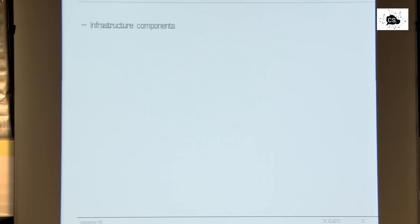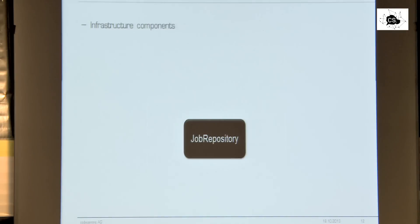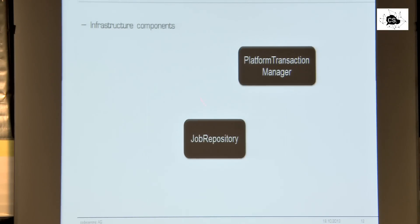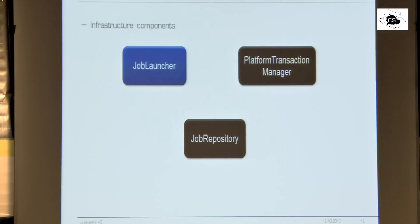We need some more components for the infrastructural stuff. We have a job repository — an infrastructure component to save job executions, load job executions, and so on. We have a platform transaction manager — an interface from the Spring core framework — for doing transaction management. One implementation is the database transaction manager, another could be a JTA transaction manager if you do your batch processing on an application server. And another very important infrastructure component is the job launcher, responsible for launching jobs and restarting jobs.